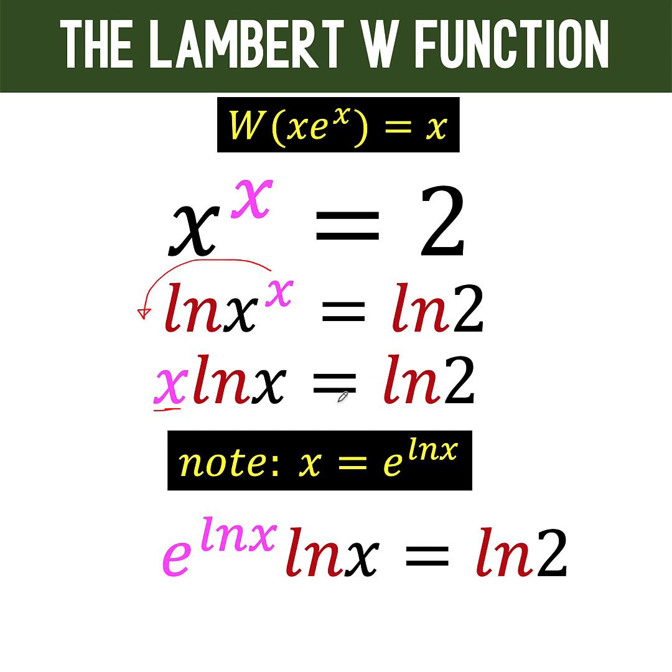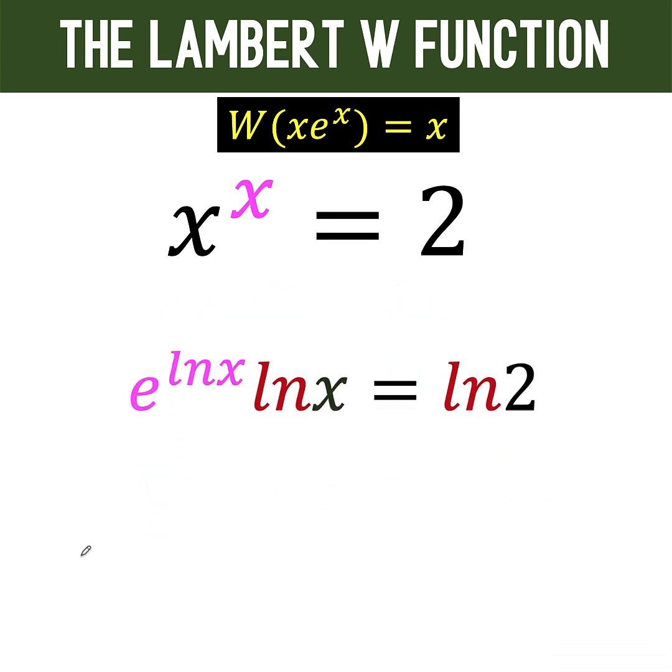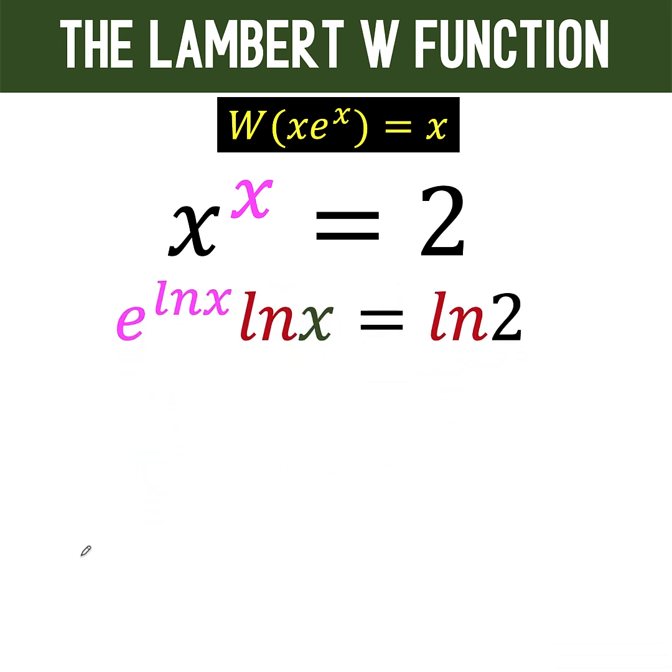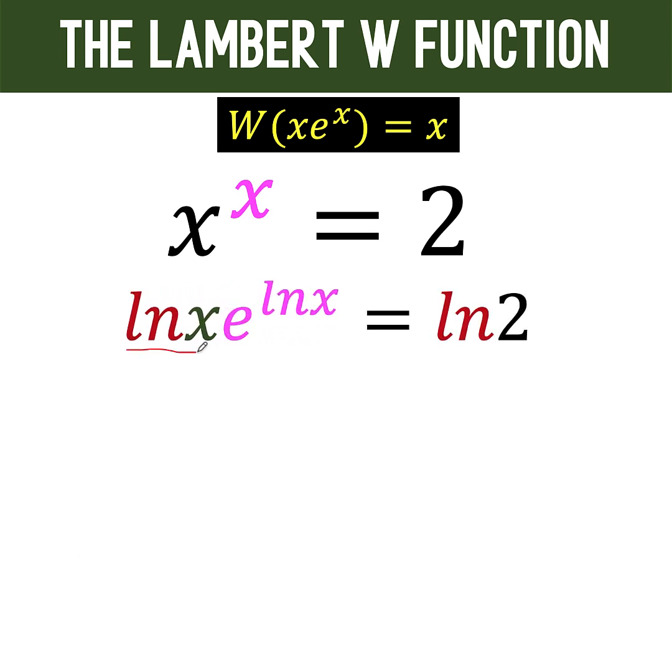Now, since the form we want is certain factor times e raised to another variable, we want this ln x to be written at the front. So let's apply the commutative property of multiplication. That means we can interchange the order of the factors. Now, this ln x and this ln x are the same. So let's use some color code. So this form is exactly the form x times e raised to x.